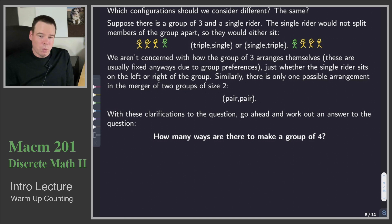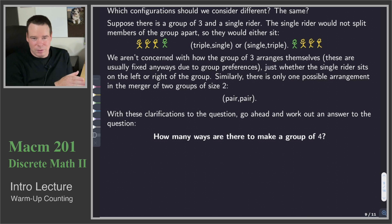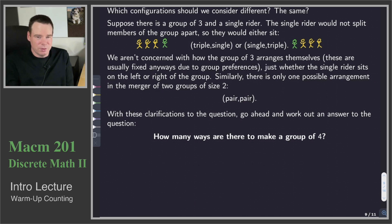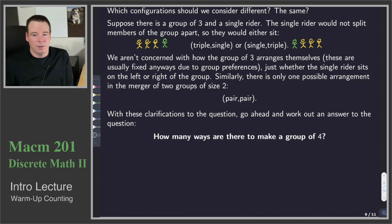Similarly, there is only one possible arrangement for the merger of two groups of size two — it's just going to be a pair and then a pair. We're not going to be concerned whether it was two children and two adults arranged as child-child-adult-adult or adult-adult-child-child. We are going to think of what counts as different as just: was it a pair and another pair? So those would be considered the same, because it was just two pairs that joined together.